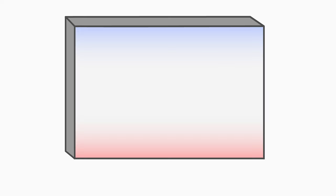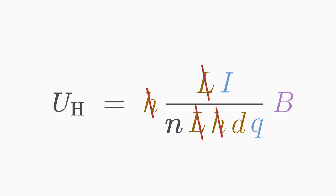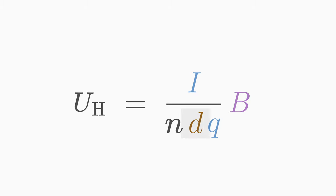The volume of the plate is the length l times width h times thickness d. L and h cancel each other out so that only the thickness d of the plate remains in the formula.